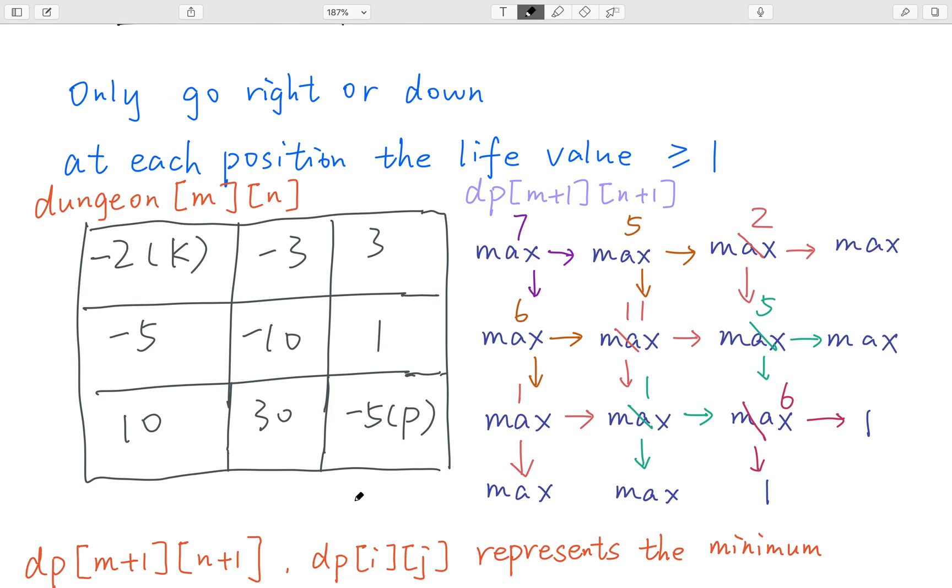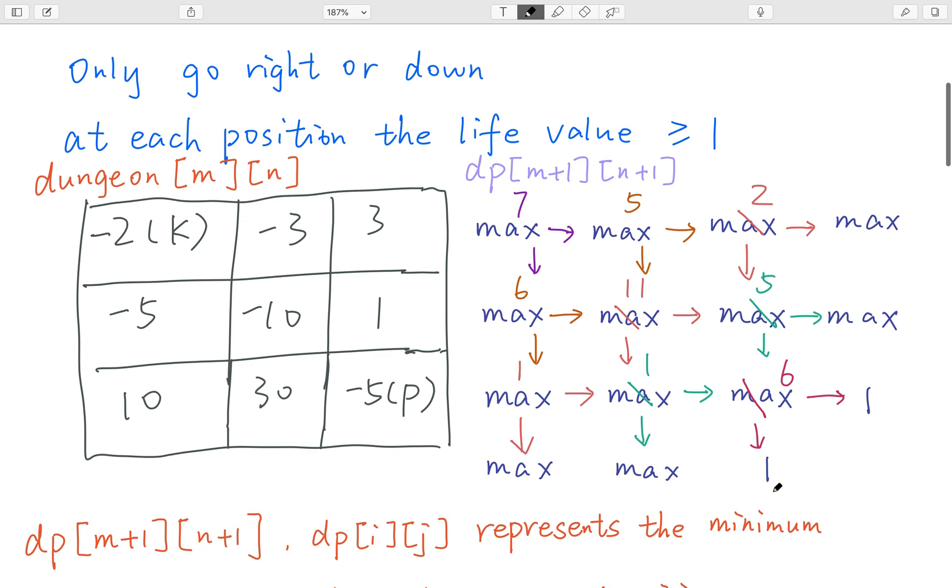Then we know in the end, it can be 1, right? So we just initialize this dp array to integer max value except these two points. These two points will be 1. And then we choose the minimum. Actually, the same is 1, right? So at this place,